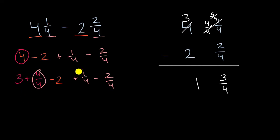And then if you add the four-fourths to the one-fourth, that's going to give us five-fourths. So you're going to have three minus two, that's that part and that part. And then you're going to have, if you add the four-fourths and the one-fourth, so plus five-fourths minus two-fourths. And that's exactly what we have here.